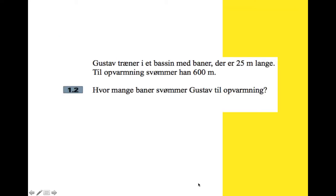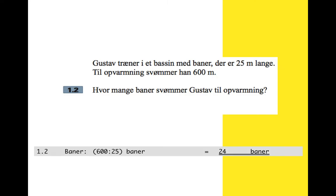Question two: Gustav trains in a pool with lanes that are 25 meters long. For his warm up, he swims 600 meters. How many lanes is that? So that's just 600 divided by 25, which makes 24 lanes.